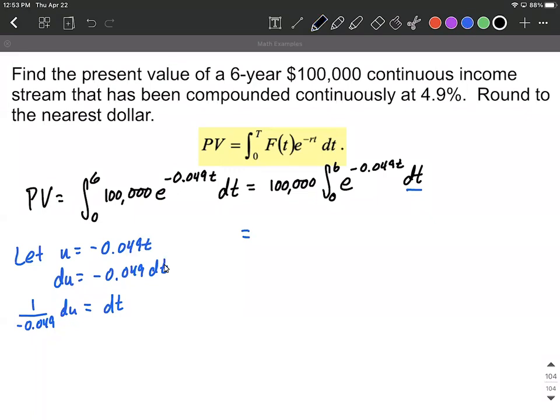So we can fill in, we have the 100,000 out in front. We can fill in e raised to the u power. And then we want to replace dt with du. And then we have that constant, the one divided by that negative decimal. I'm going to go ahead and move that decimal out in front. So I'm going to put it underneath the 100,000.